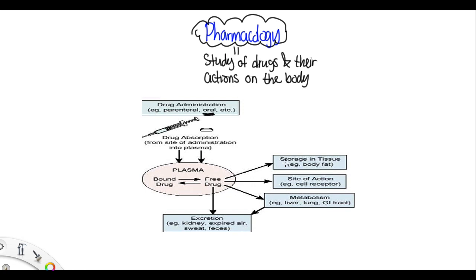Once the drug or medication is administered, it's going to be absorbed into the blood. In the blood, it could either be bound by proteins or it could be free. It's going to either be stored in tissues like body fat, it could go to the site of action and bind to receptors and exert its action, it could be metabolized or broken down by the liver, which is the primary organ for metabolism, and eventually it is excreted, mostly by the kidneys.